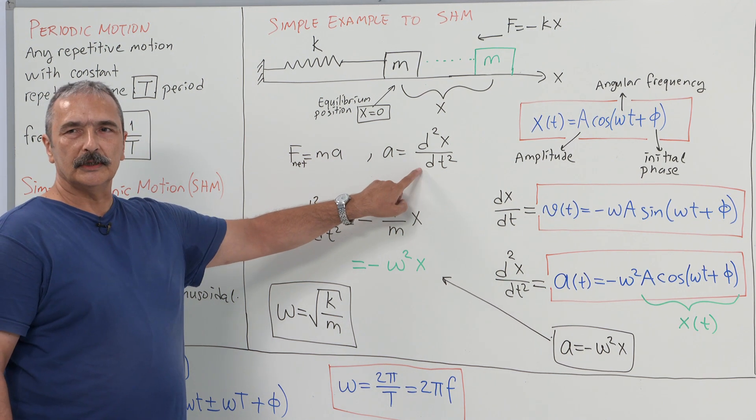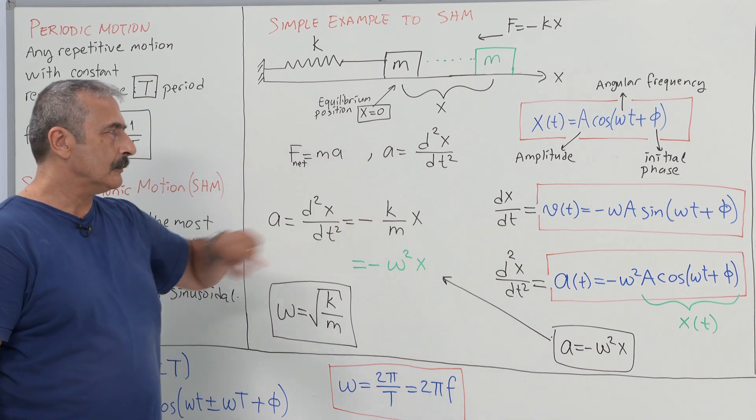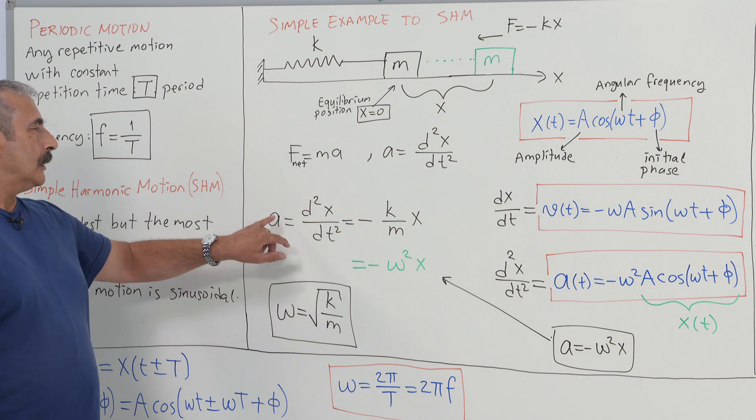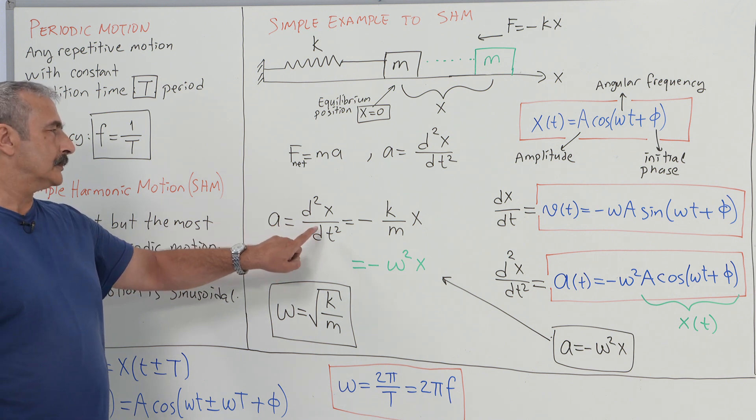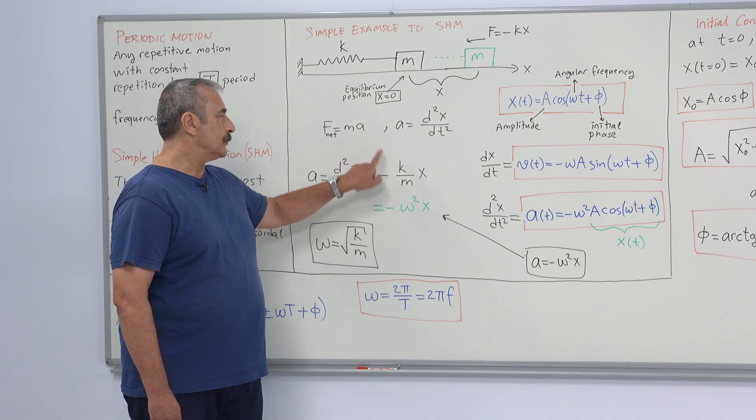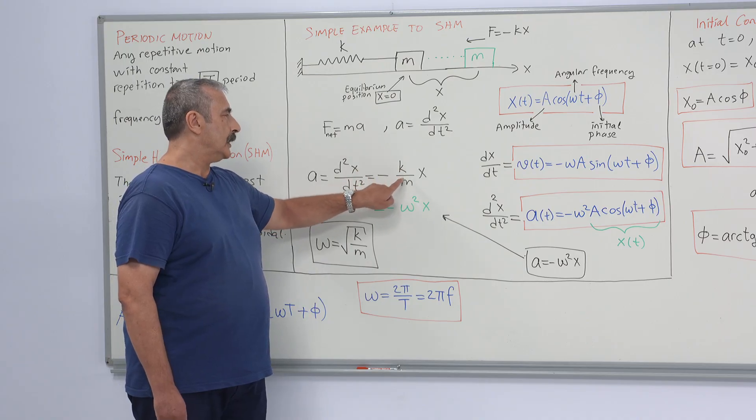Acceleration is the second time derivative of the position or the displacement. I will leave acceleration here alone. Second derivative of the displacement is from the equation of x.